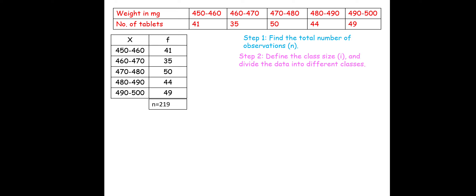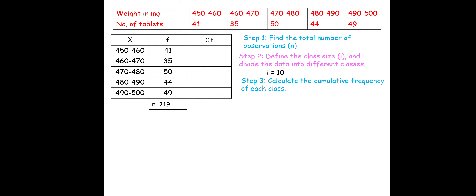Step 2: class size — each class (450–460, 460–470, etc.) has a class size of 10, so i = 10. Step 3: calculate cumulative frequency: 41, 41+35=76, 76+50=126, 126+44=170, 170+49=219.